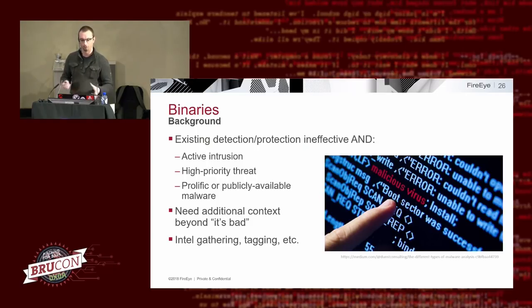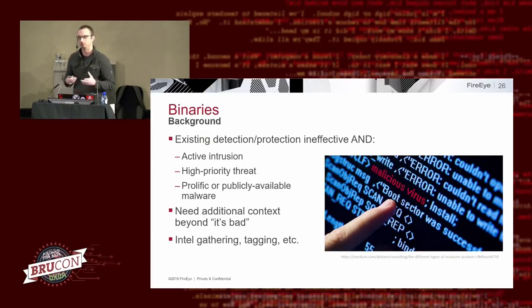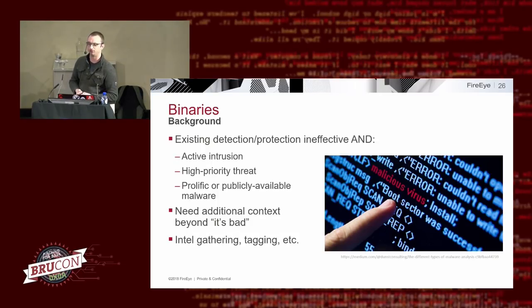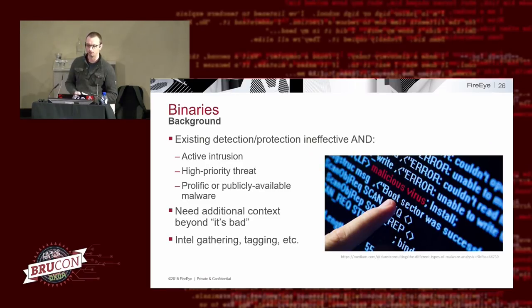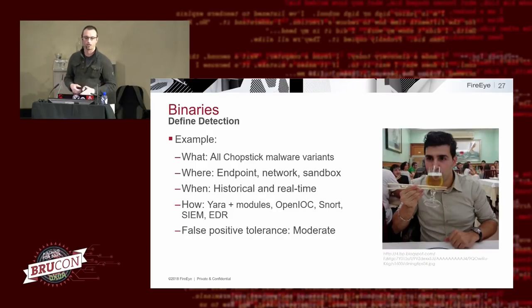We want early detection in as many places as possible. We also need additional context beyond just 'it's bad.' ML is great at malware detection but not great at providing context. Having additional detection capabilities for malware you're particularly concerned about gives you context — not only is something bad according to ML, but 'it is in fact APT28' gives you a lot more context than 'this is probably a coin miner.'